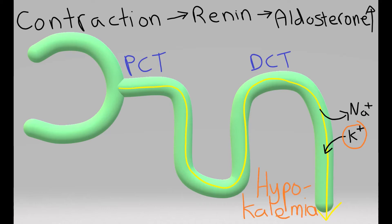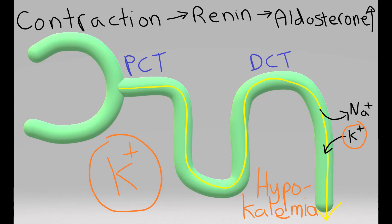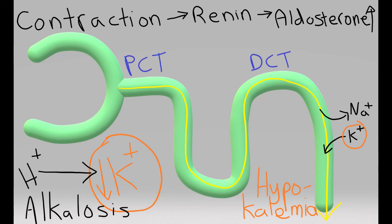Let's take a look at the cell. Potassium is an intracellular ion, so it's primarily inside the cell. When there's a hypokalemia, that's mainly going to affect the intracellular concentration of potassium, and that's going to go down. If potassium goes down inside the cell, that will draw hydrogen into the cell because of the charge difference. With less hydrogen outside the cell, it's going to lead to a metabolic alkalosis. That's the first way volume contraction leads to a metabolic alkalosis.